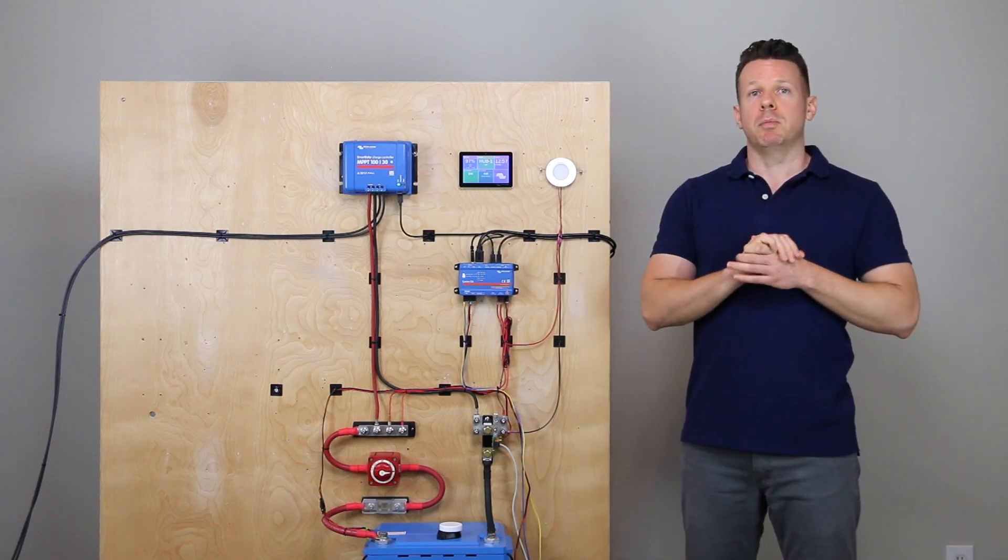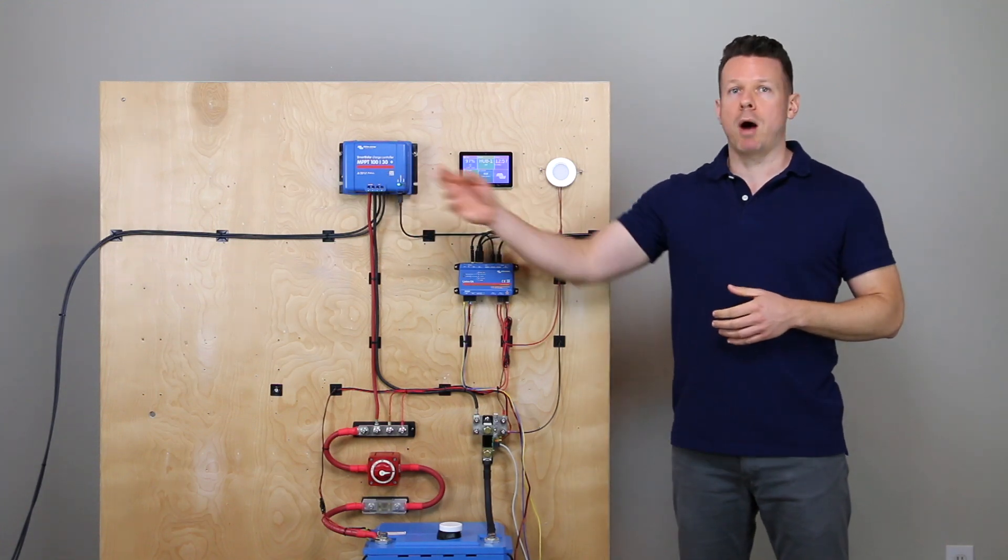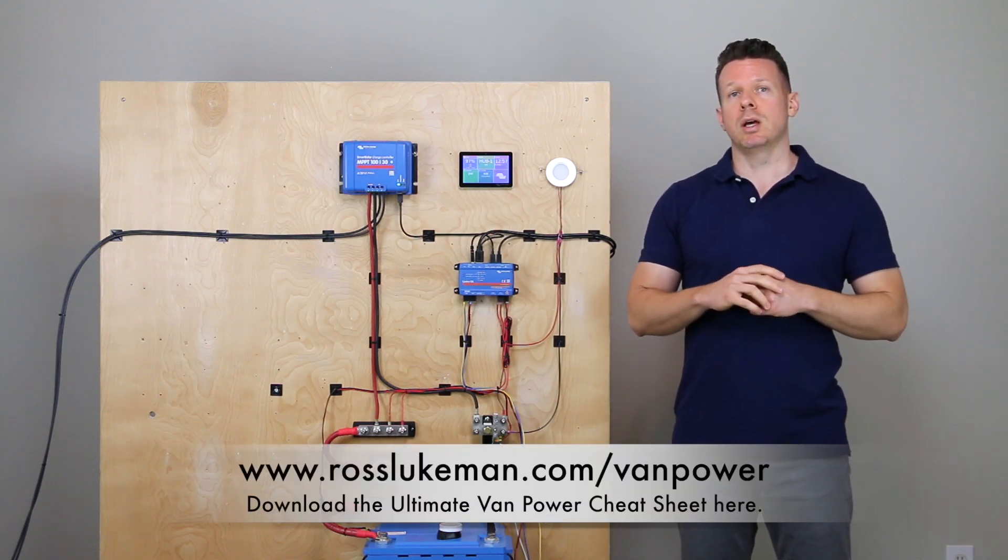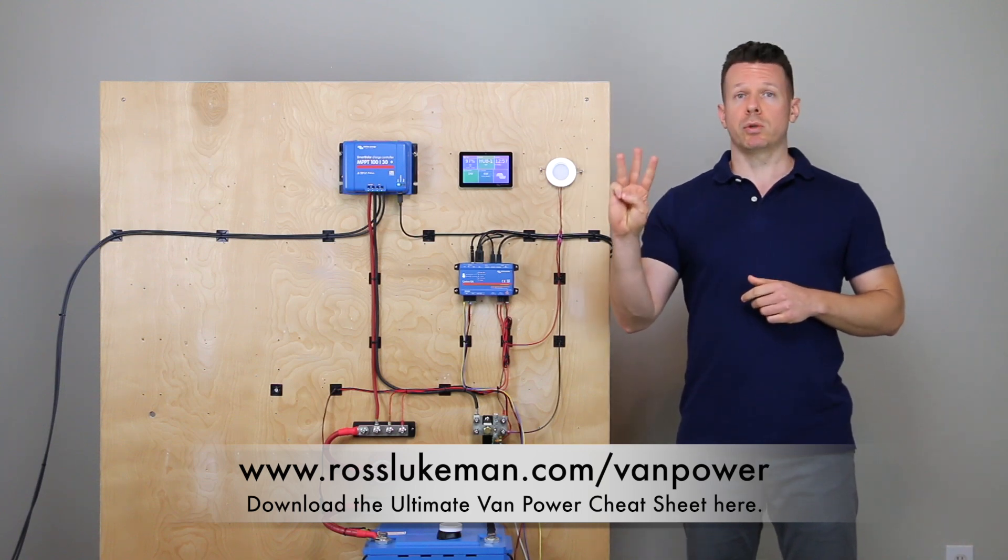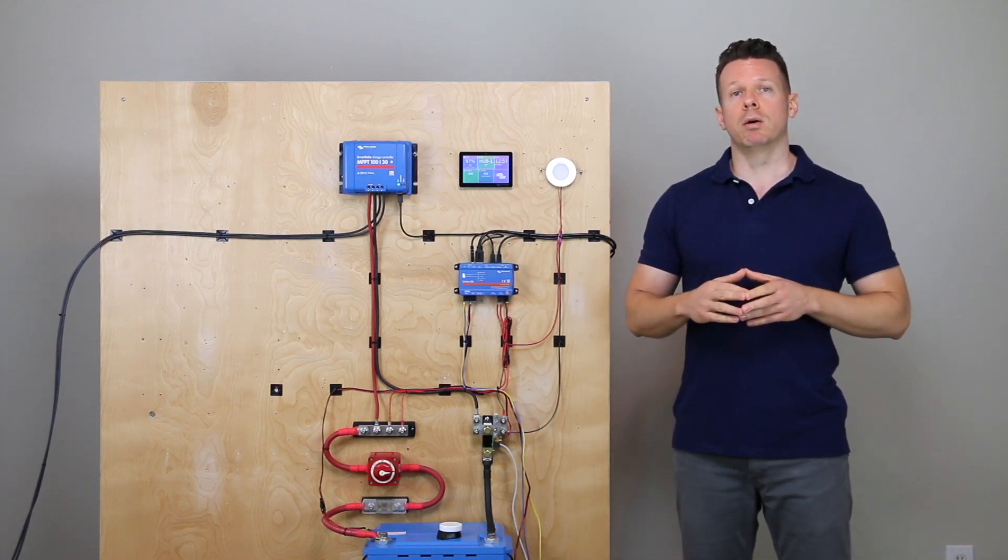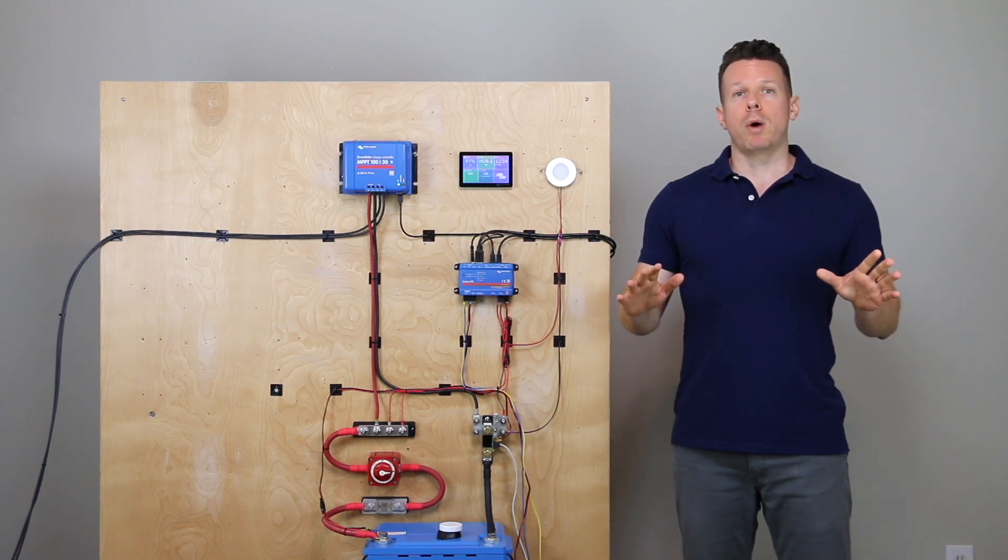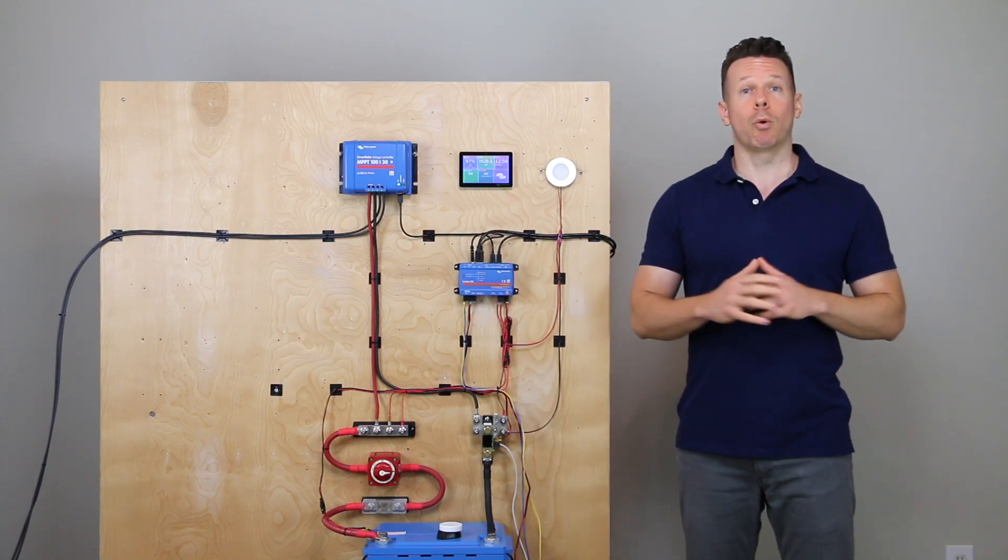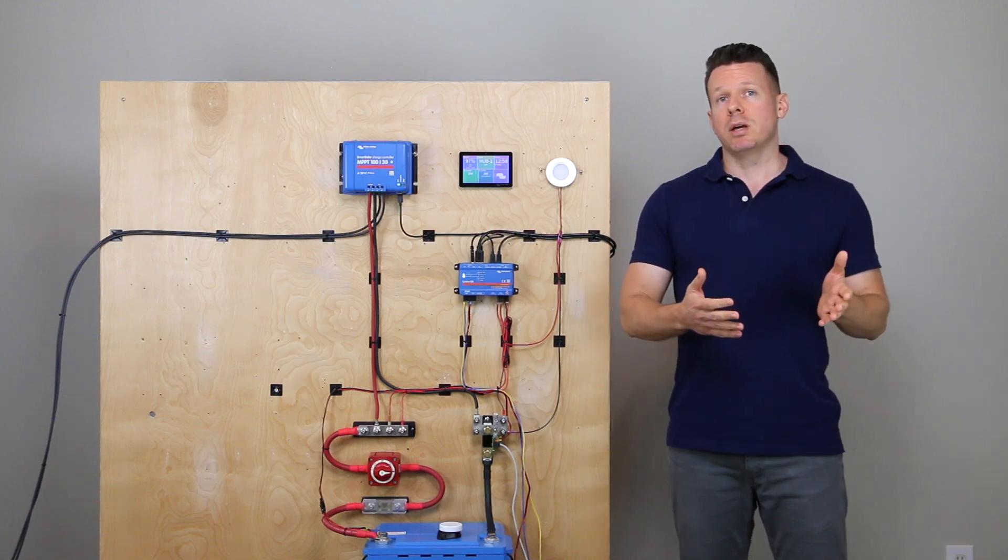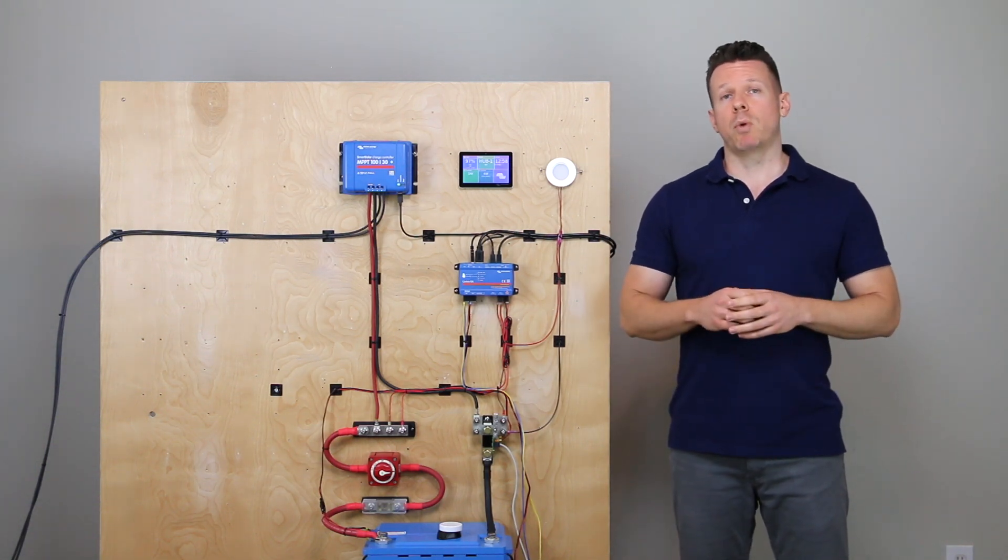But before we talk about how to set up the Ruuvi tags with the Cerbo GX, if you're interested in your overall power system, not only monitoring temperature and humidity and things like that, but also your solar power, your shore power, your alternator power, I have a resource that you may be interested in called the Ultimate Van Power Cheat Sheet. It's got a discussion of those three major charging sources: solar, shore, and alternator power. And it talks about how they all have strengths, but they each have weaknesses as well. But when you bring them together in a holistic power strategy, it's going to make sure you have a good charge source no matter where you go out on the road. There's also a discussion of the different battery chemistries and the strengths and weaknesses of those.